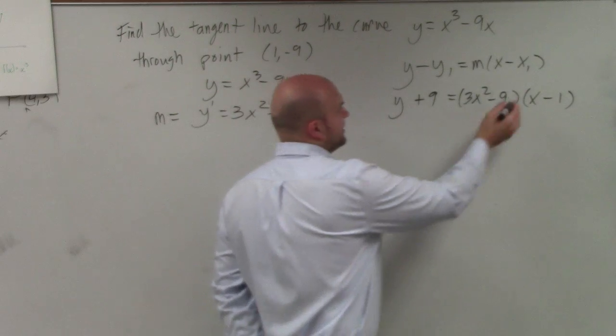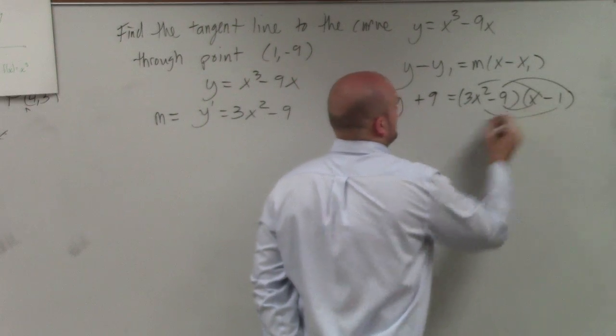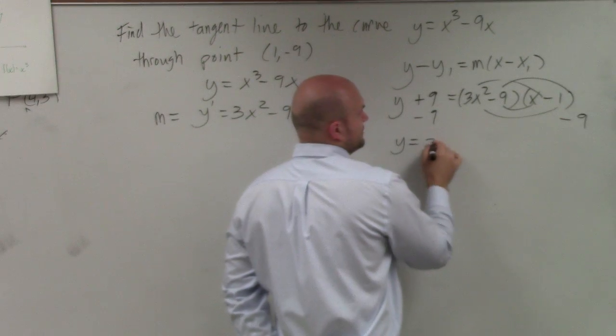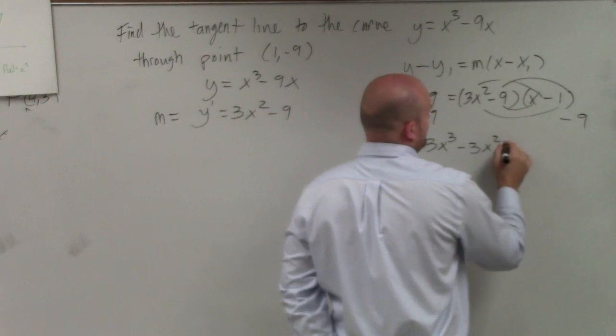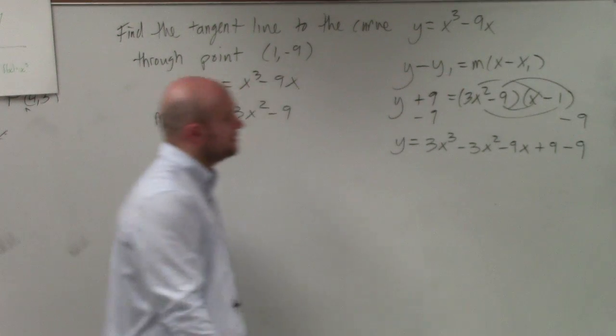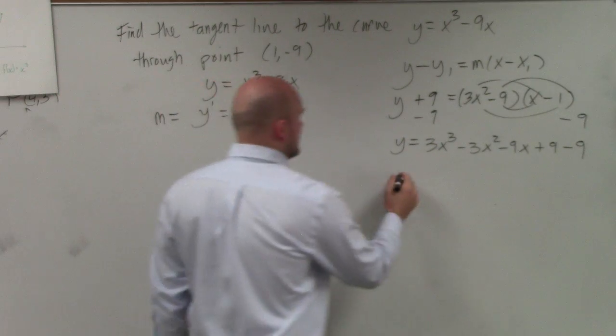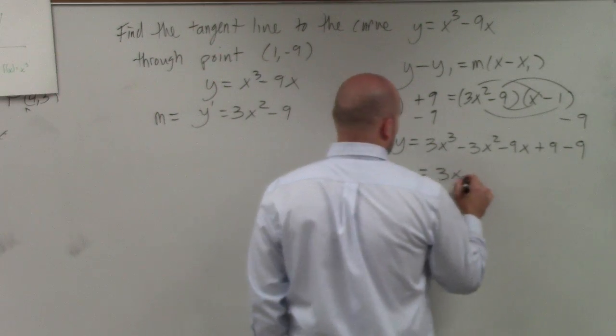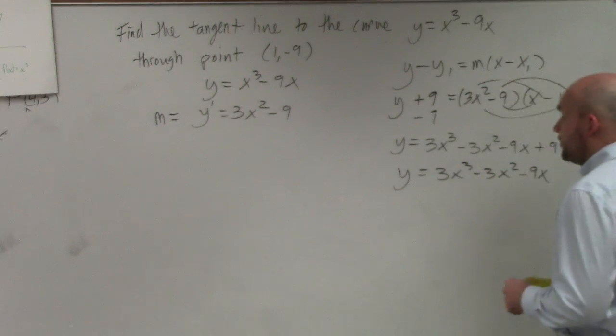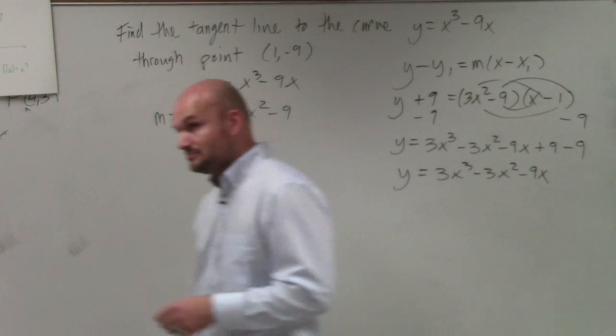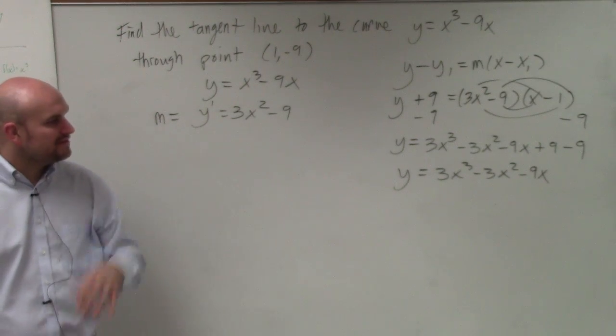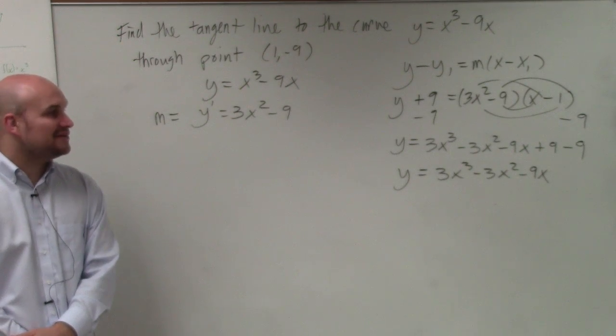Now we just need to do a little bit of math. So I get y = 3x³ - 3x² - 9x + 9 - 9. And therefore, I get now y = 3x³ - 3x² - 9x. So that's the equation of my, or that is going to be my values with that given slope.